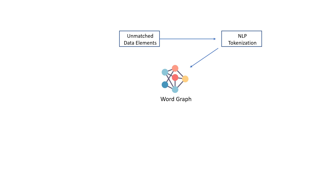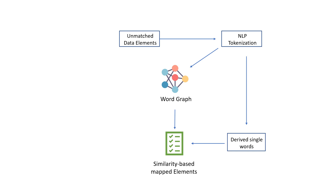Unmatched data elements are processed using NLP-based word graph similarity information retrieval, where similarity scores are computed and the given word or word sequence is mapped to words or word sequences with high semantic similarity scores. This process is used to identify similarity-based data elements that can be mapped and find a set of unmapped elements that couldn't be reconciled.